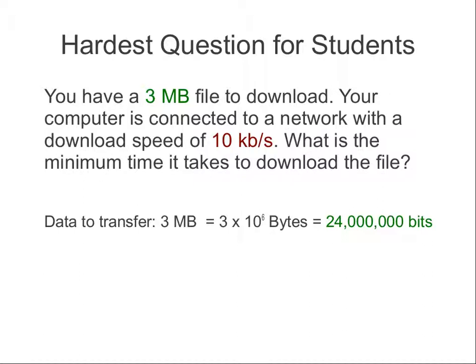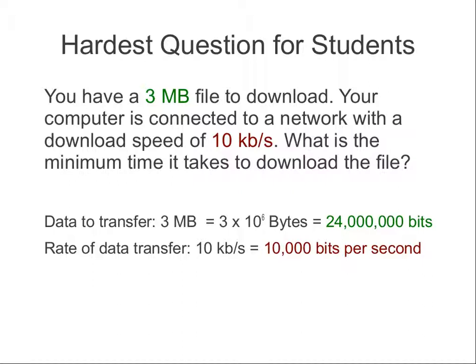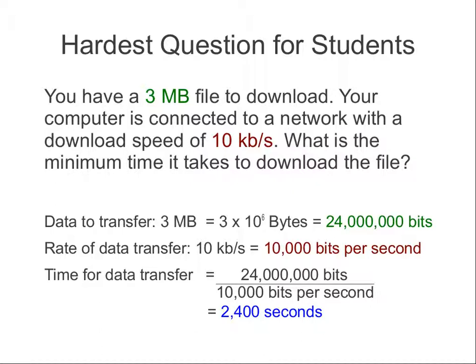We want everything in the same unit — it's much easier to calculate that way. So 24 million bits to transfer at a speed of 10,000 bits per second. You can transfer 10,000 bits in one second, and you've got 24 million bits to transfer. How long does it take, or what is the minimum time — the best case? Because you can't go faster than 10,000 bits per second. So 24 million divided by 10,000 takes 2,400 seconds. Very simple once you know how. Try to recognise the correct units and get your numbers in the right units when you calculate.